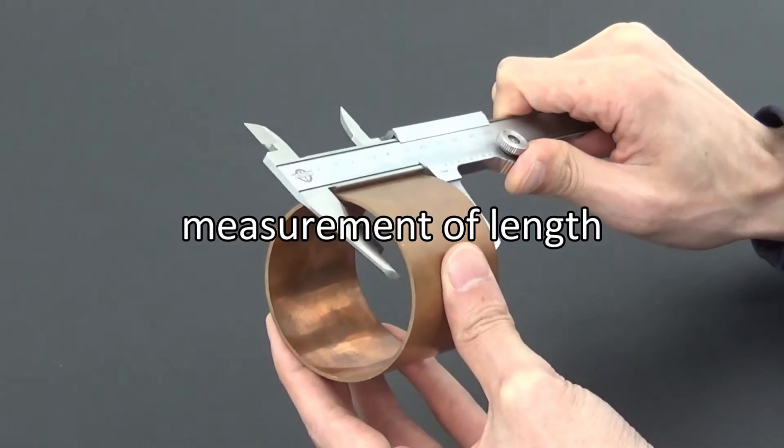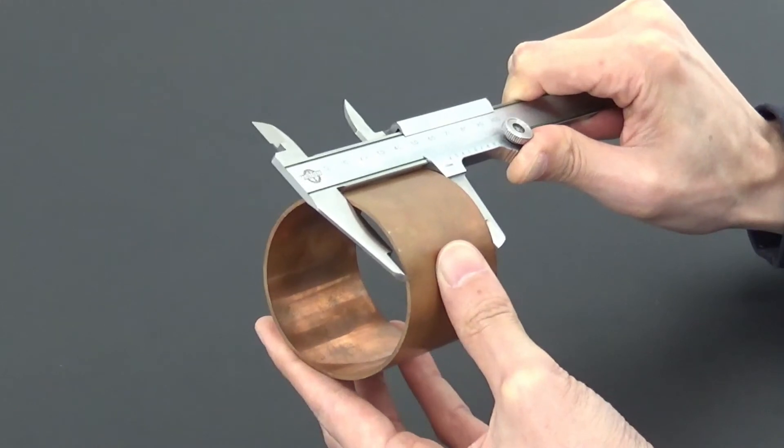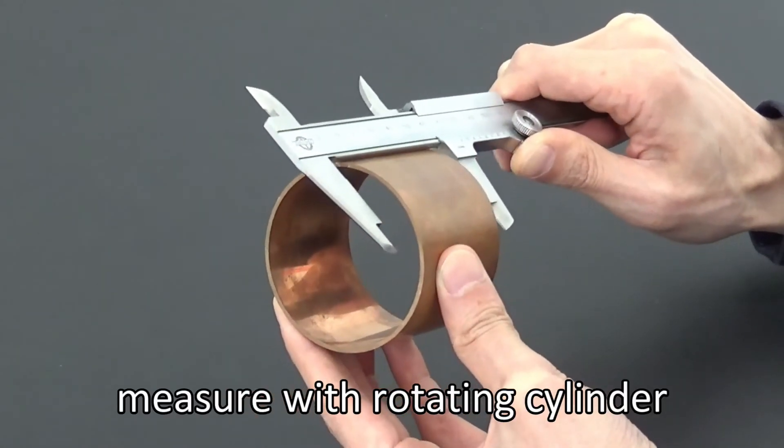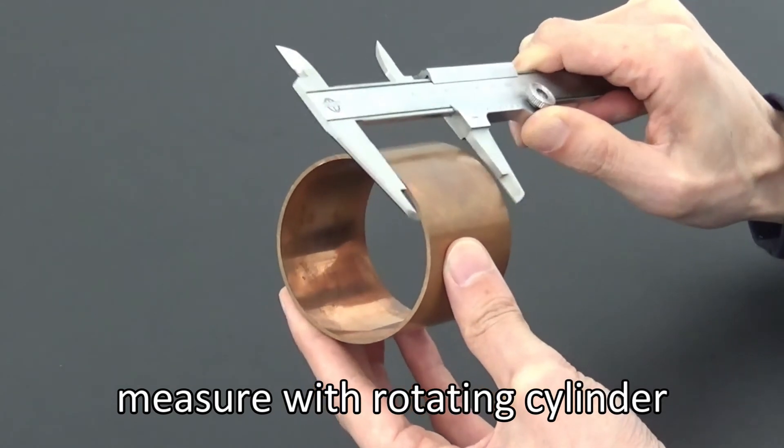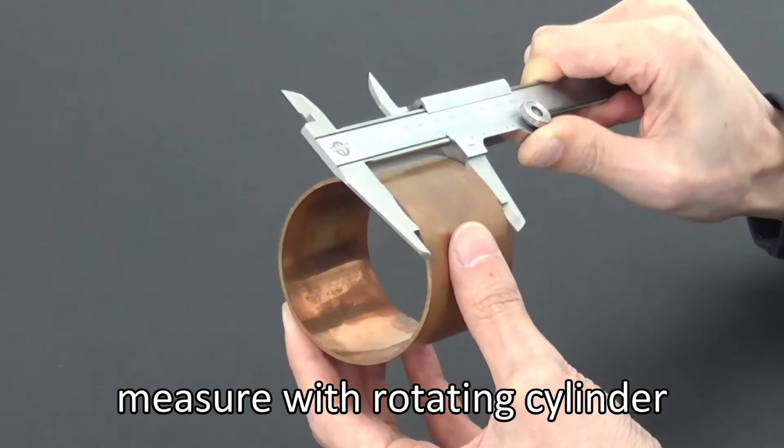When measuring the length of the cylinder, place the calipers as shown on the screen. In this case, too, the length of the cylinder may be different depending on where you measure. Once you have taken the measurement, rotate the cylinder and measure another point, and repeat this procedure.